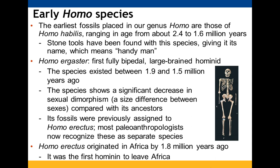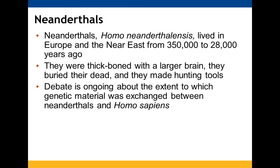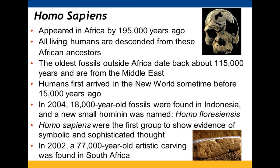Early Homo species include Homo habilis, dated to about 2.4 to 1.6 million years ago, which had a larger brain. Homo erectus appeared around 1.9 to 1.5 million years ago, with a significant decrease in sexual dimorphism. Homo erectus spread from Africa to the Near East and is thought to have appeared around 1.5 million years ago. Neanderthals, found in the Near East, dated 24,000 to 28,000 years ago, had a large frame, buried their dead, and made hunting tools. There is still ongoing debate about their relationship to modern humans.